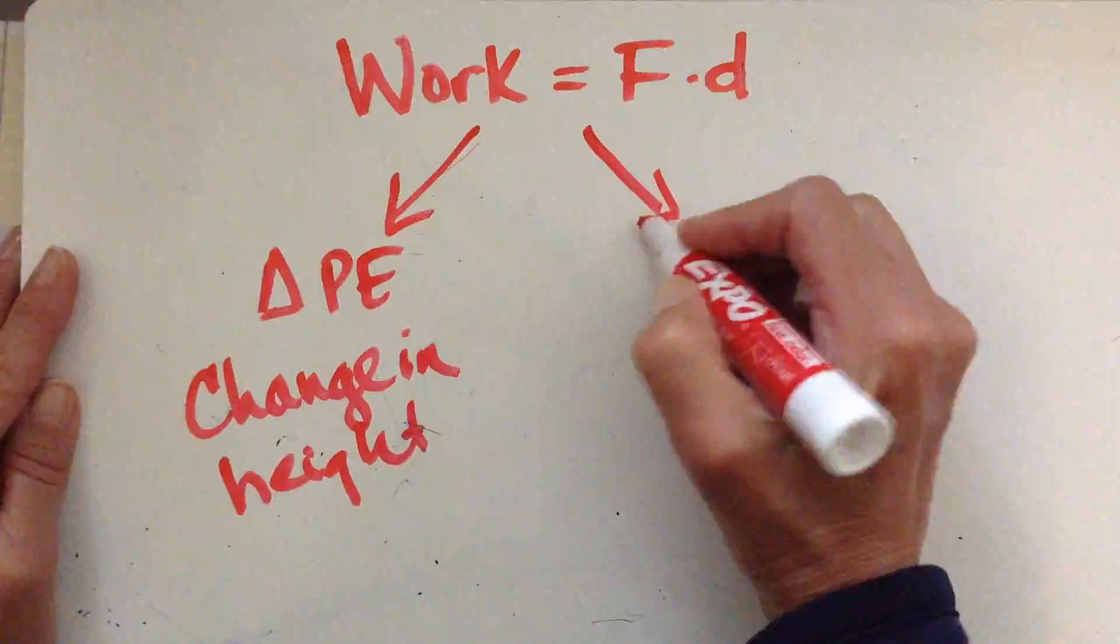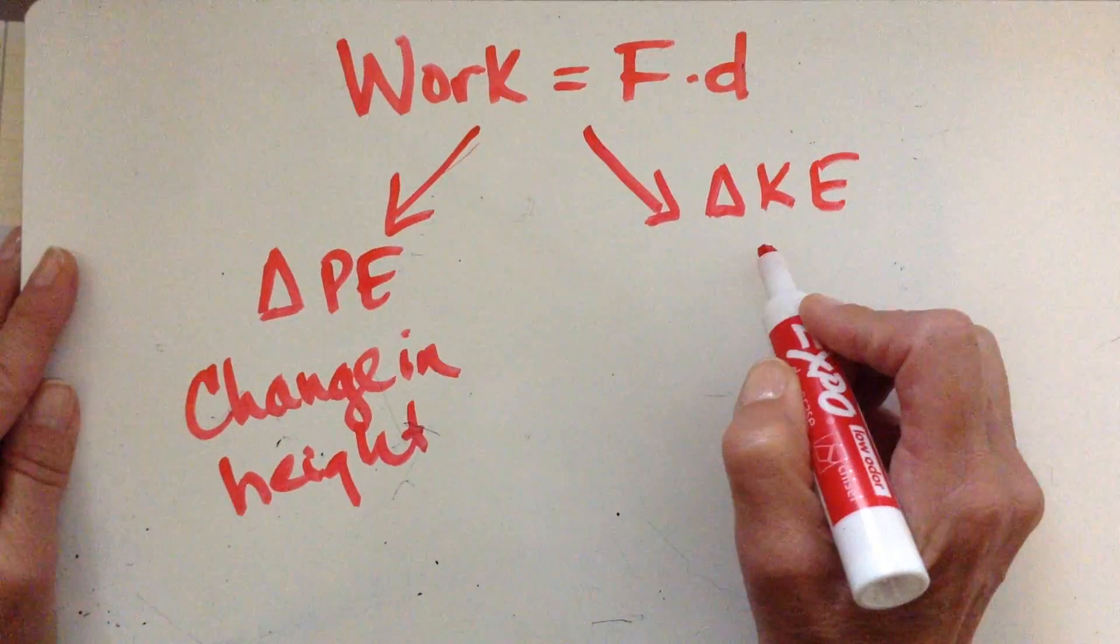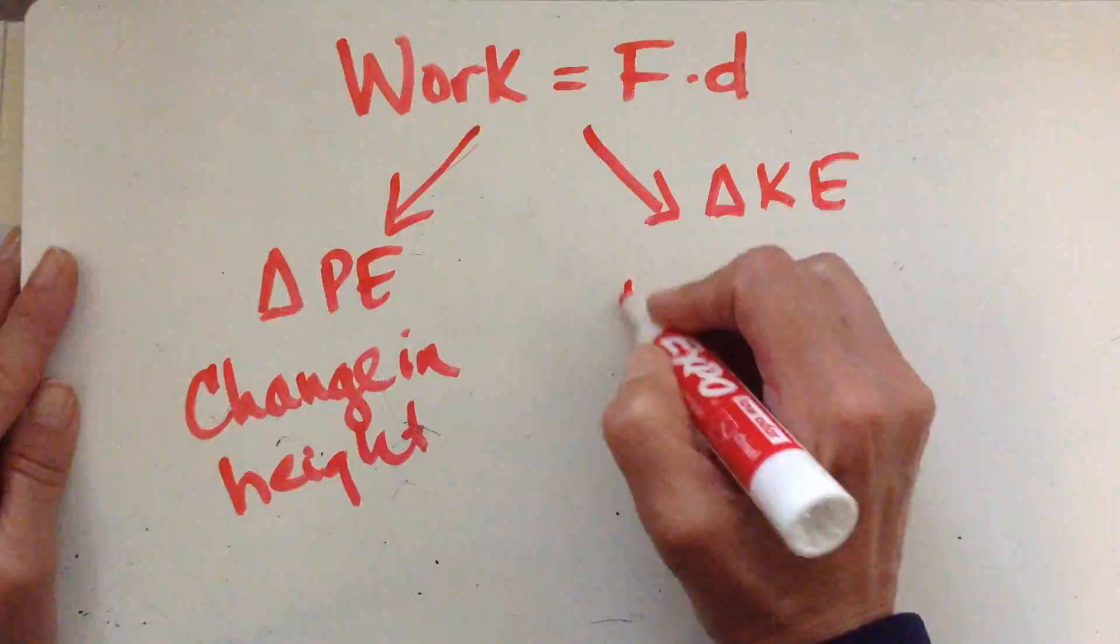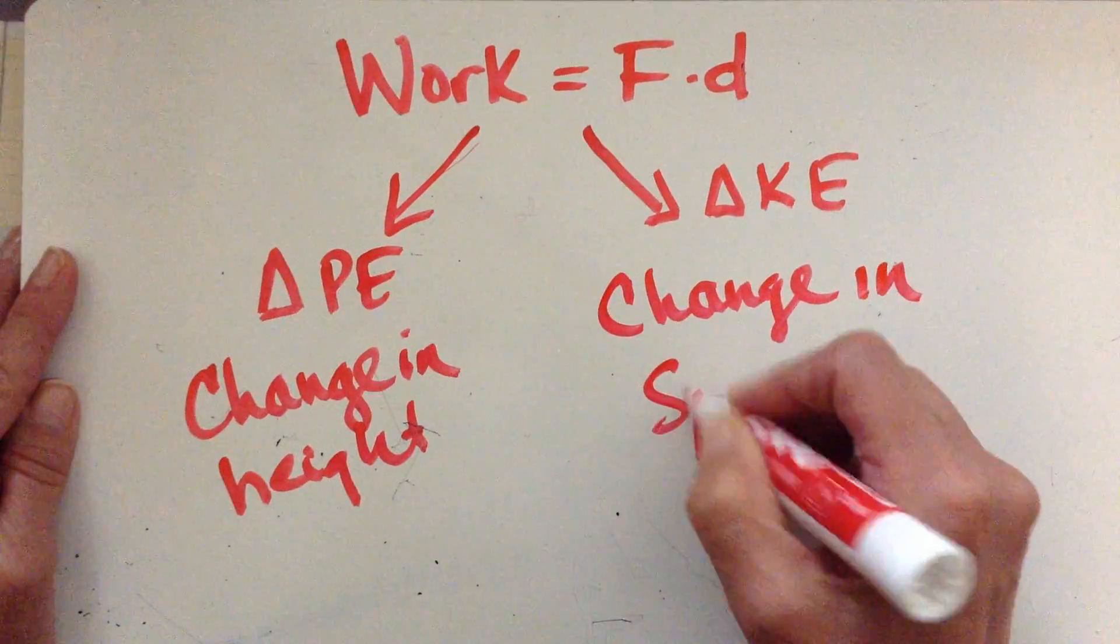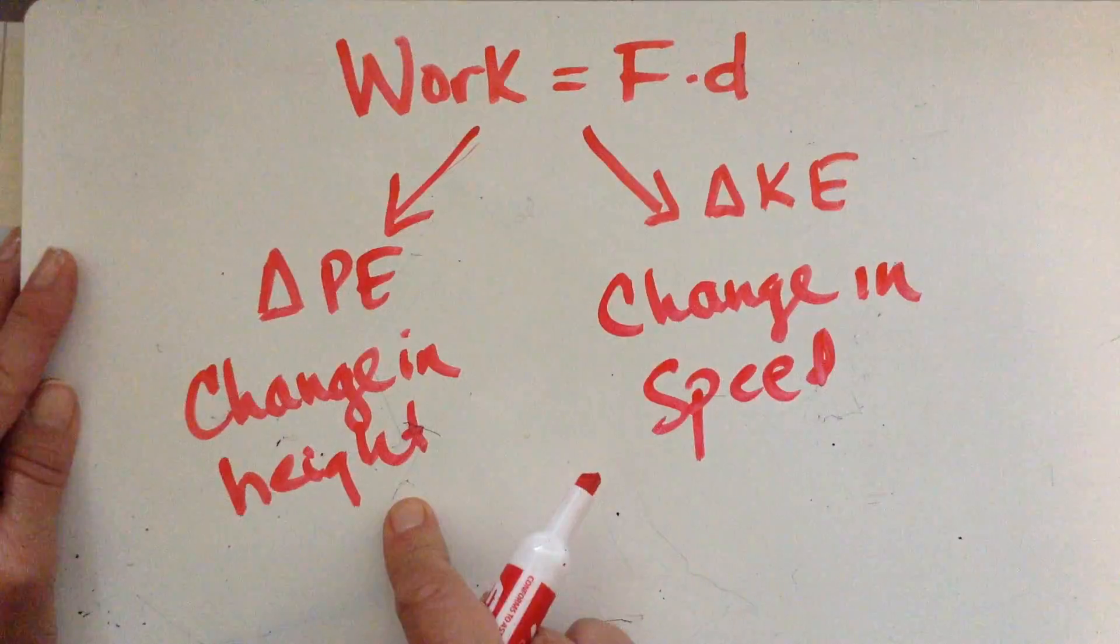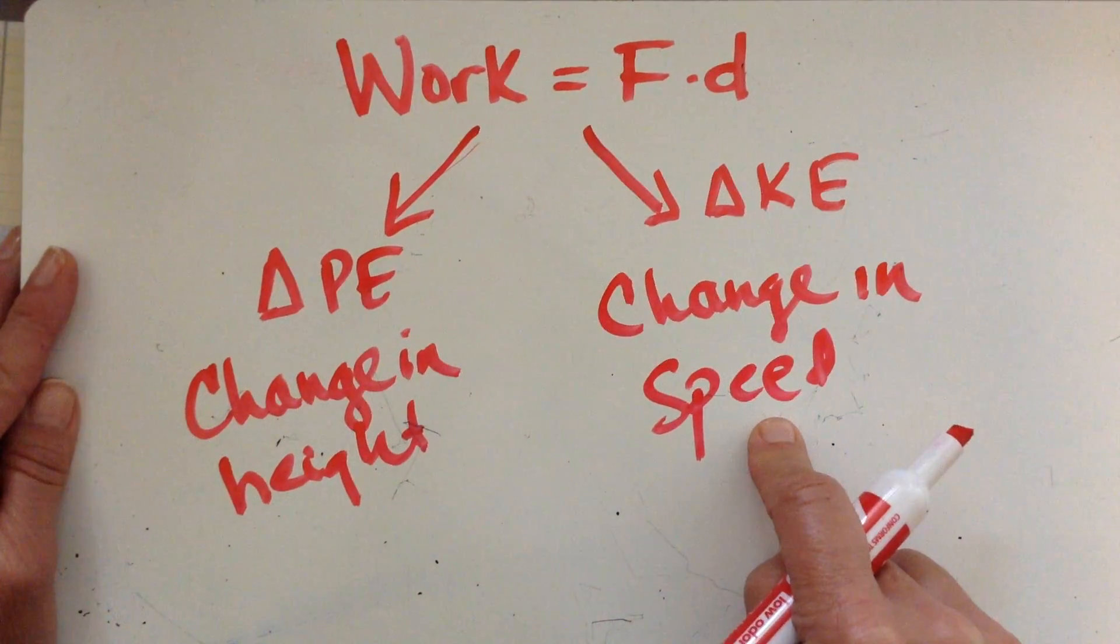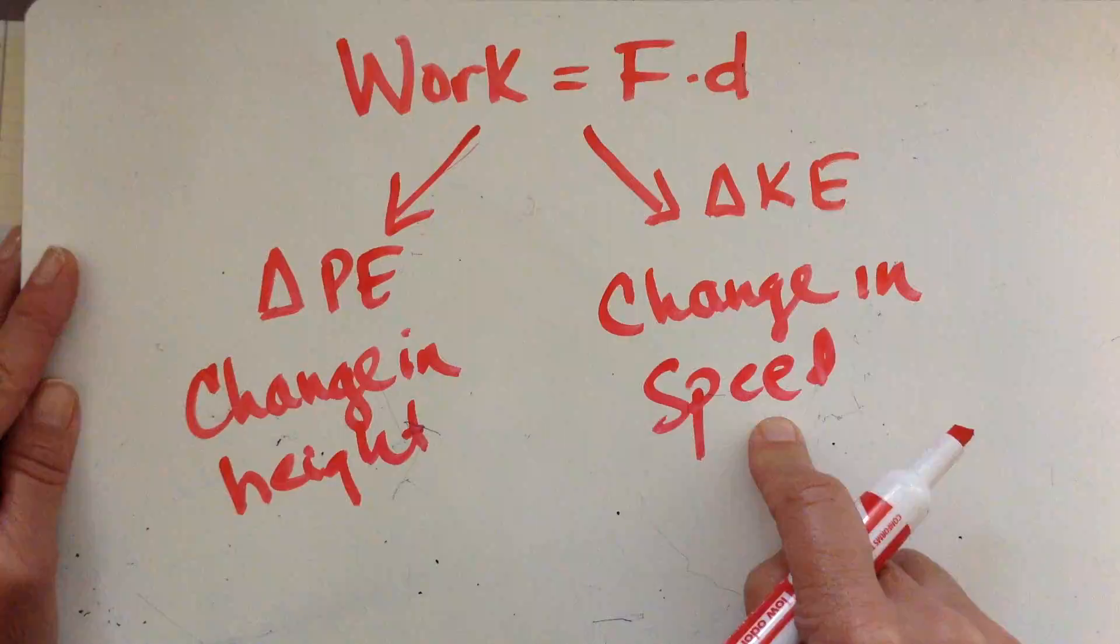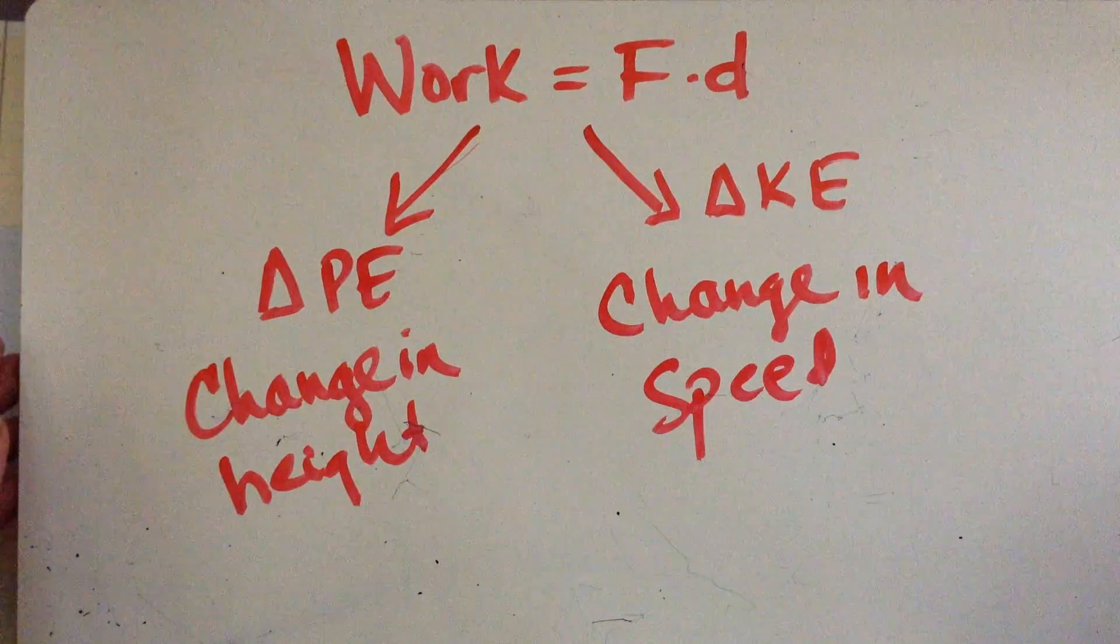So now we want to deal with the second type, and this is a change in kinetic energy. And the change in kinetic energy is going to be associated with a change in speed. Easy enough. Change in height, we're looking at changes in potential energy. Changes in speed, we're looking at changes in kinetic energy. It's kind of basic, if you think about it, it's not too crazy.